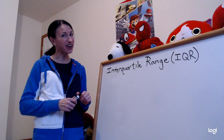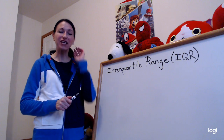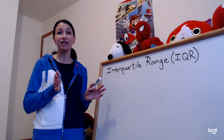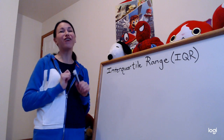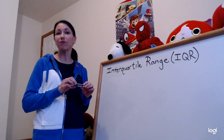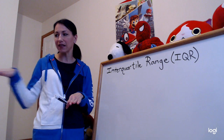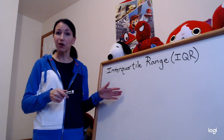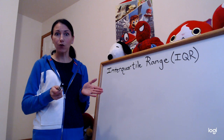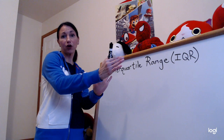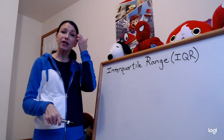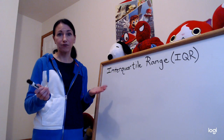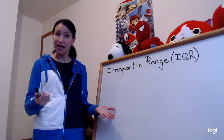Interquartile range starts with something we learned about two weeks ago, which was the median. The median is the number in the middle. There were two steps when finding the median: first we line up the data in order from smallest to largest, then we find the median. Then we find the median of the lower group and the upper group, and find the range — we take the high and subtract the low.